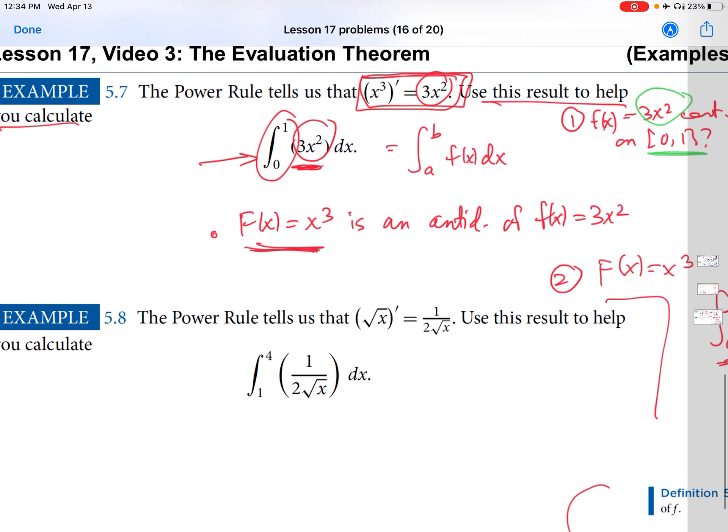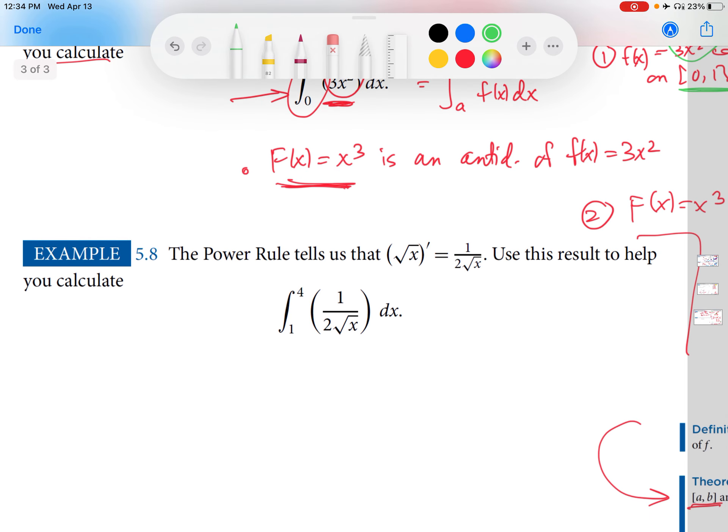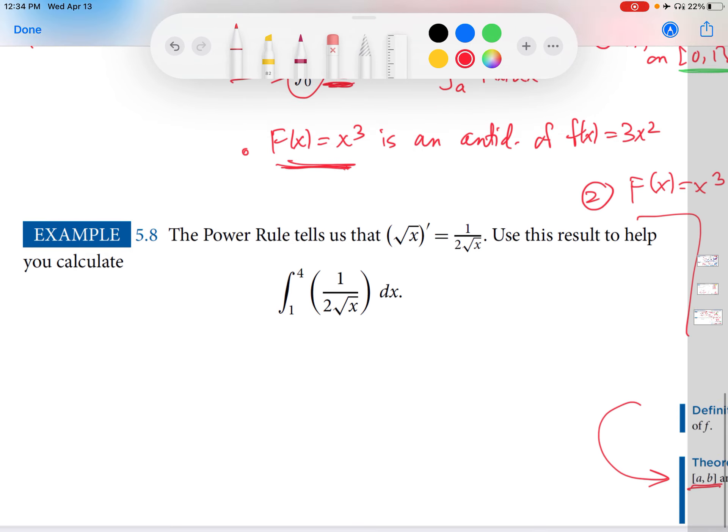Let's do this all over again for this last example here. Same idea. We're told that the power rule, we're reminded that the power rule tells us that the derivative of √x is 1/(2√x). Use this result to help you calculate this. I'm going to speed things up a little bit since we've now done all the background for picking out what's needed. So this is a, this is b, this is little f(x). So we want to calculate the definite integral from a to b of little f(x) dx. We know from the evaluation theorem it's going to be equal to this provided those two hypotheses are satisfied.